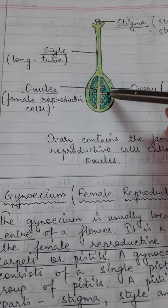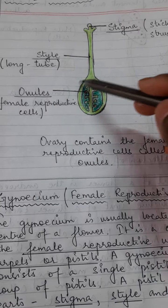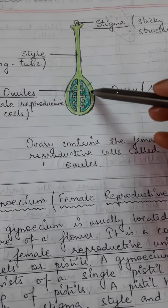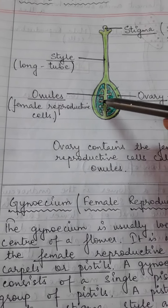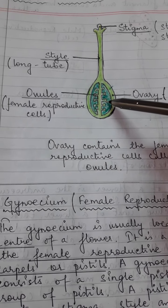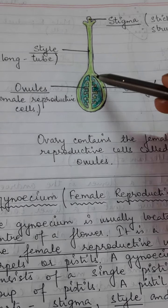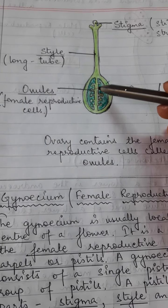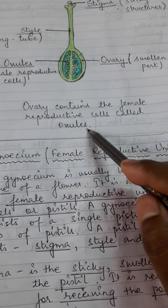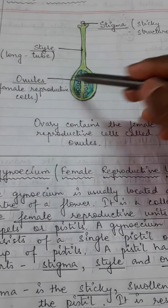After fertilization, the ovary — this whole part — forms fruit, so it will convert and become a fruit. Whereas the ovules will turn and become seeds. So after fertilization, the ovary becomes a fruit and the ovules convert into seeds. The ovary contains the female reproductive cell called ovules.